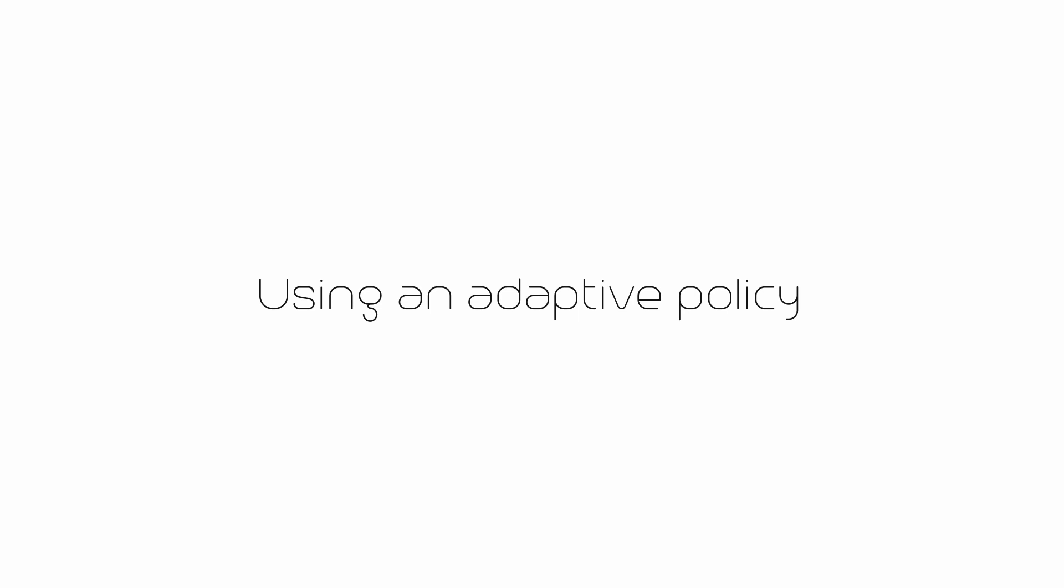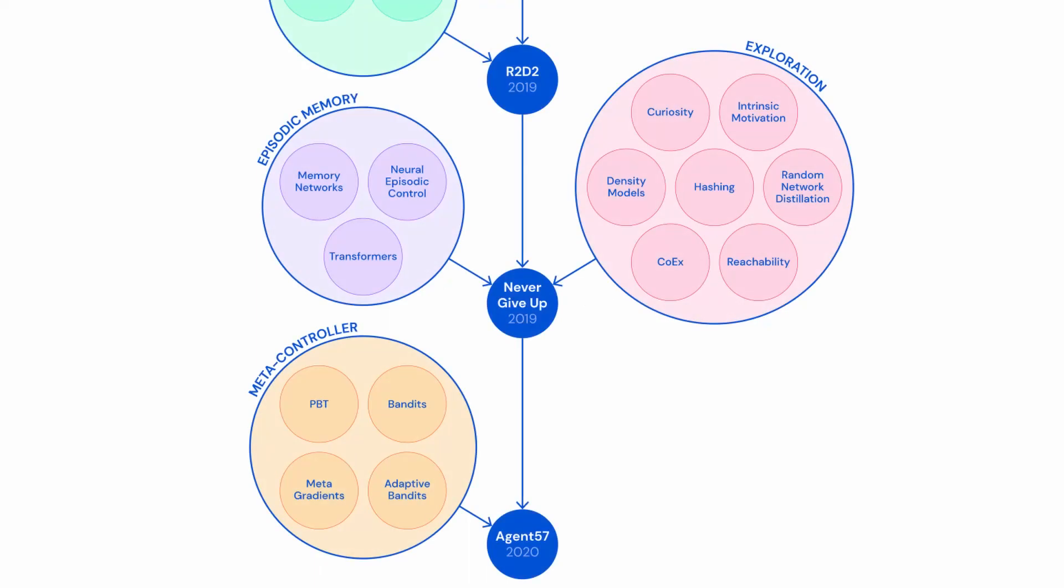Lastly, Never Give Up learns an agent for each beta multiplier. But what happens when a single adaptive policy is learned?